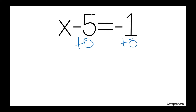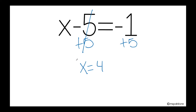Now I am ready to cancel this out. So I have x is equals to — remember that when two integers have different signs, you need to subtract them and keep the sign of the greatest absolute value. So my answer will be positive 4, because 5 minus 1 is 4 and the greatest absolute value is positive 5. So this is my final answer.